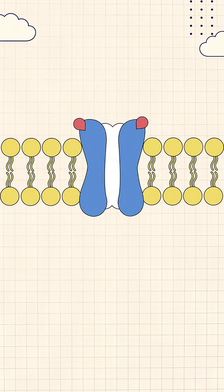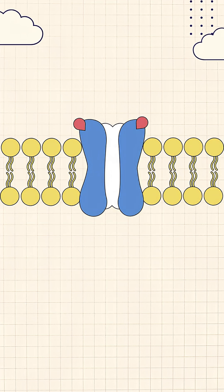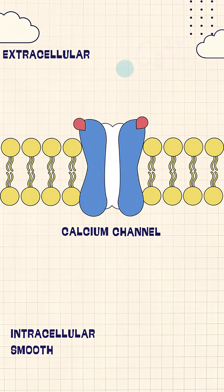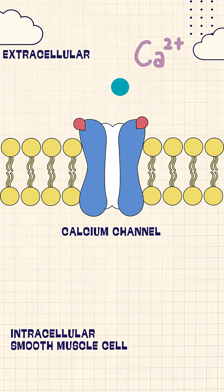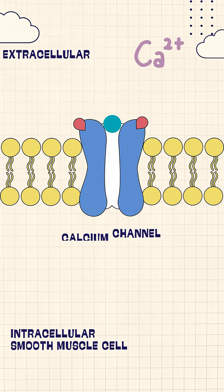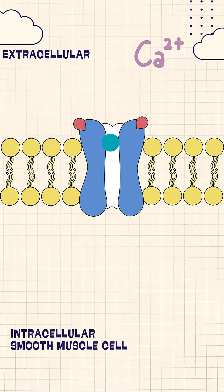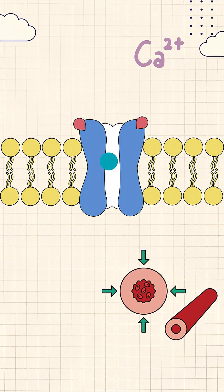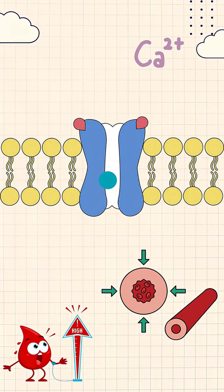To understand its mechanism of action: calcium channels are tiny gates on heart and blood vessel muscle cells. When calcium enters, the muscle contracts, making blood vessels tighter and blood pressure goes higher.